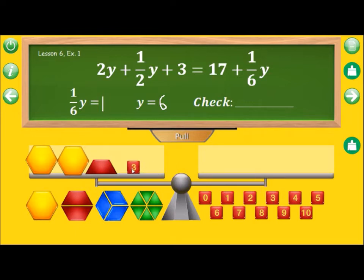And on the right side, I have 17 plus a sixth of y. OK, we're told that y is six. On the left side, we have six and six is 12 and three is 15 and three is 18. So the left side of our equation is worth 18.